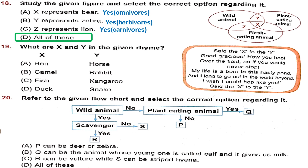Question 19: What are X and Y in the given rhyme? 'Set the X to the Y — good gracious! How you hop over the field.' Y is an animal that hops in the field — likely a kangaroo. 'My life is a bore in this hasty pond' — X lives in water. Out of options, fish lives in water and kangaroo hops. Option C (fish and kangaroo) matches both clues in the rhyme.